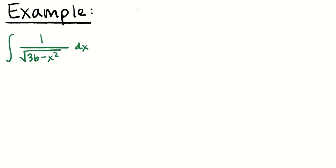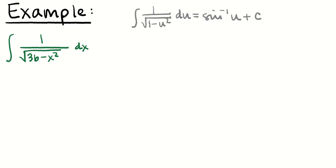This one looks similar to an integral we're supposed to know: the integral of 1 over √(1 − u²) du equals inverse sine of u, plus c. It looks kind of similar, but how do we work this around into something we can take the antiderivative of more easily? We're going to need some heavy-duty algebra. First, I'll factor out the 36 because I want a form of one minus something squared.